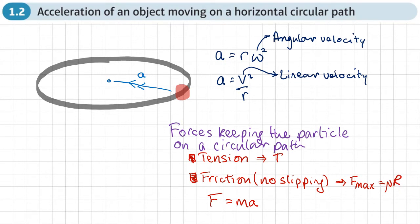If we do have mu R, for example, then we need to consider the normal reaction, which we get from Mg, because we need R to work out mu R — this frictional force — which we can then put into F equals MA.